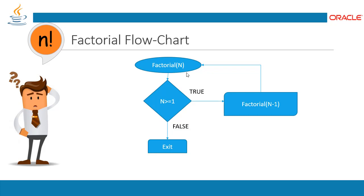Now let's look at the flowchart. Factorial of n can be implemented in a number of ways; this flowchart uses recursion. Recursion means the method calls itself until the condition is true, instead of using loops or other iterations. It makes the system simpler and more efficient. The method starts with n — if n is greater than or equal to 1, it calls itself with n-1 and multiplies back, repeating until n equals 1, then it exits.